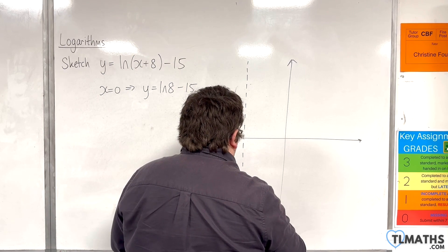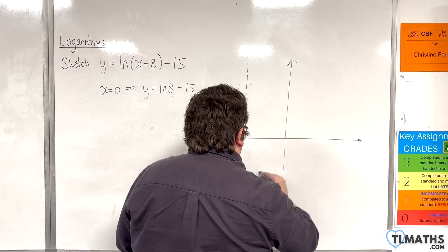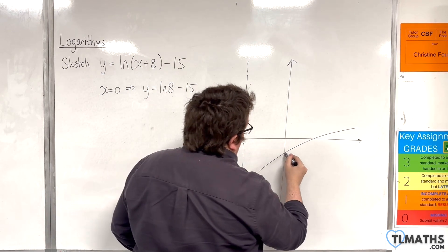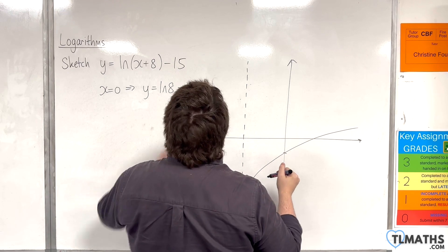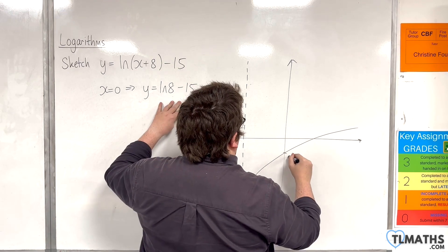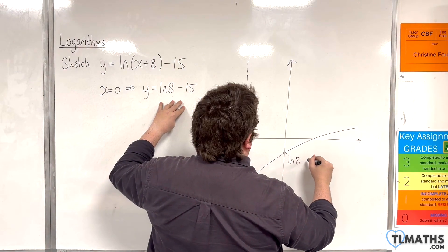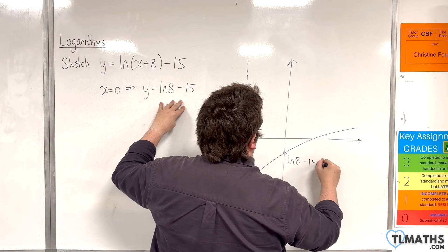So it's crossing down here, and our curve will look something like that. This point will be the natural log of 8 take away 15.